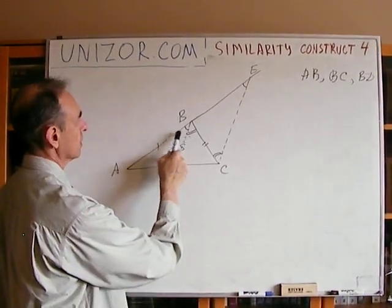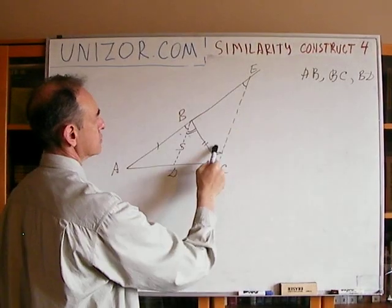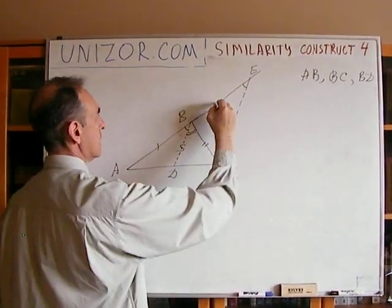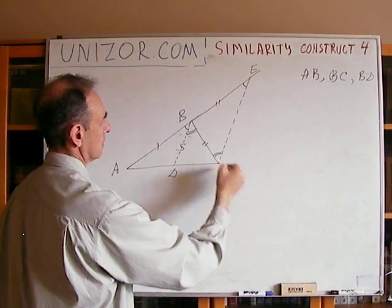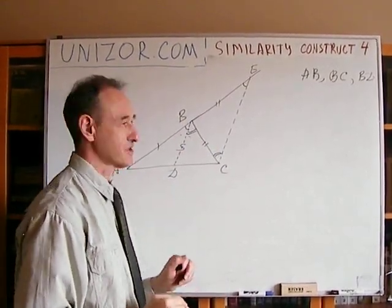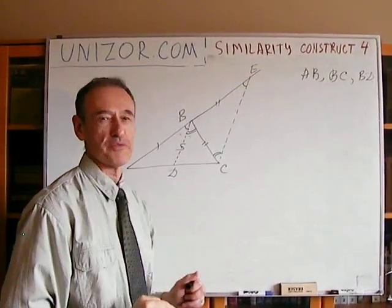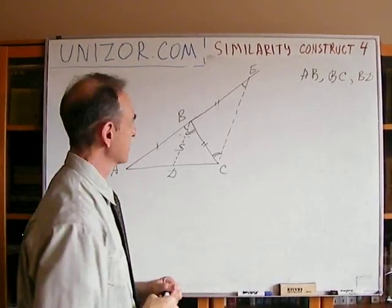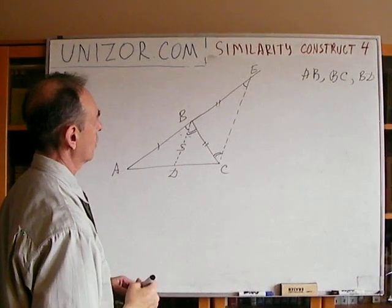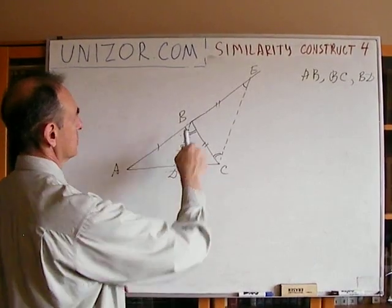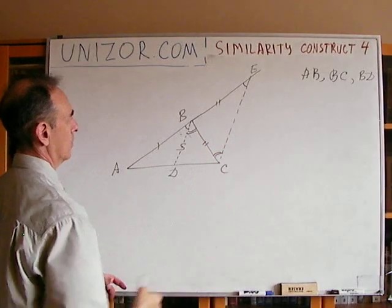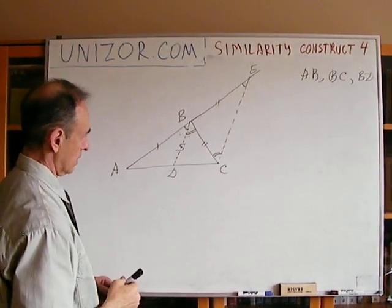So these triangles are equal to each other, which means these angles are equal, which means side BE is exactly the same as BC — although on my drawing it doesn't really seem so. Consider my drawing a little more perfect, and triangle BEC is isosceles.